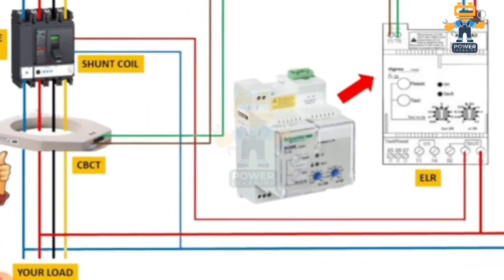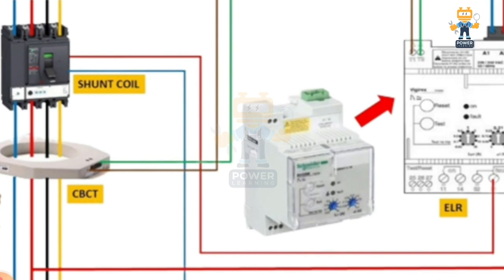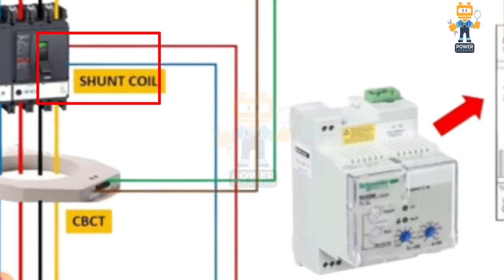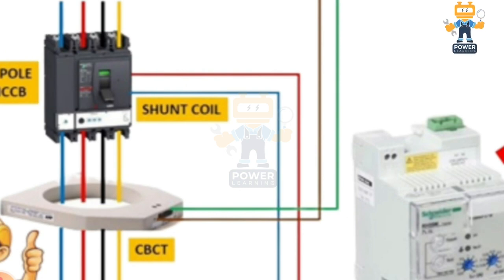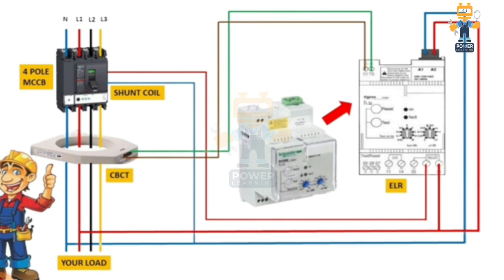The earth leakage relay will activate a switch. Here you can see these two red wires — they work as a switch contact. Once the CBCT signals the earth leakage relay, the relay closes this contact. This closed contact commands the shunt coil located inside the four-pole breaker. The blue wire connects directly to the shunt coil, so once the earth leakage relay is activated, it triggers the shunt coil, which trips the breaker and protects the circuit.